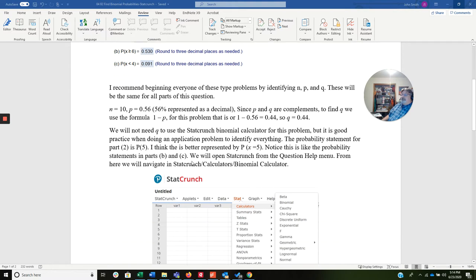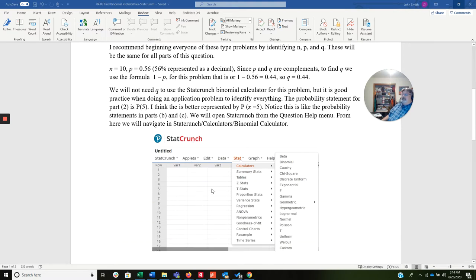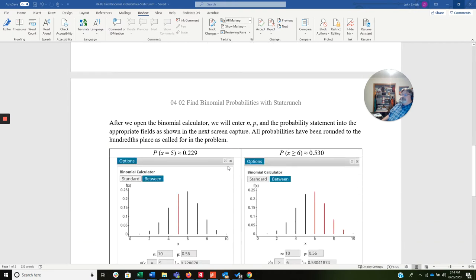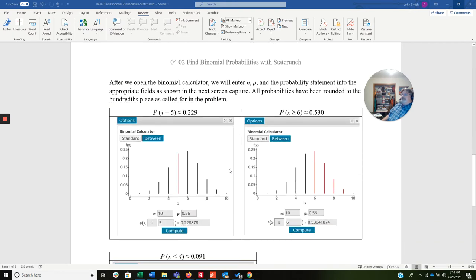So how do we get to the binomial calculator? We go into StatCrunch, and here's the screen capture. Calculator is binomial. It's right there. So when I click on that, it's going to open the binomial calculator, and we'll have to enter N and P, and the probability statement in the appropriate fields as shown in the next screen capture.